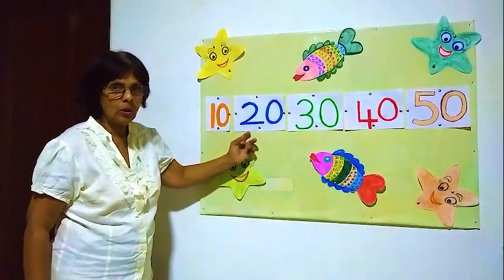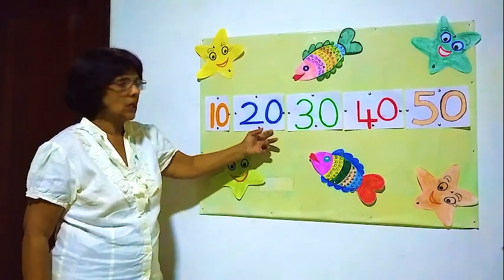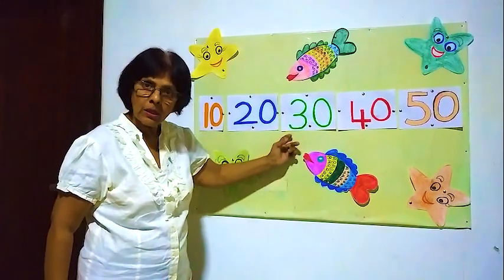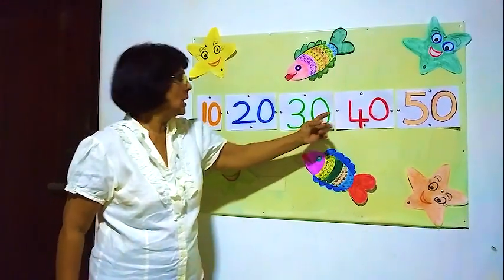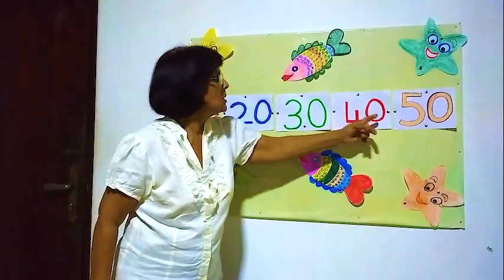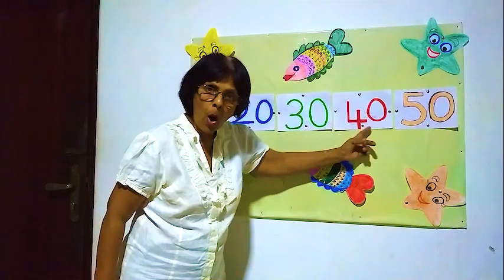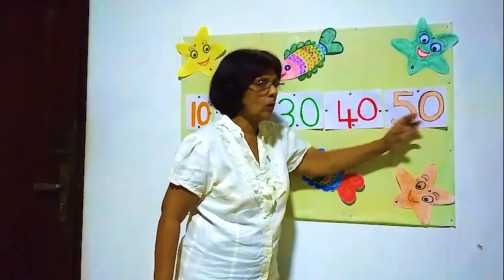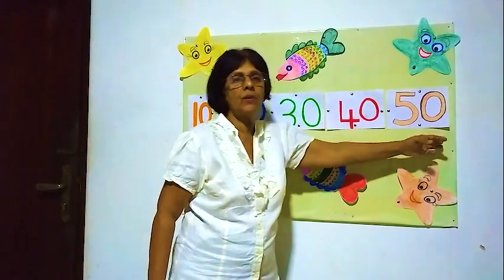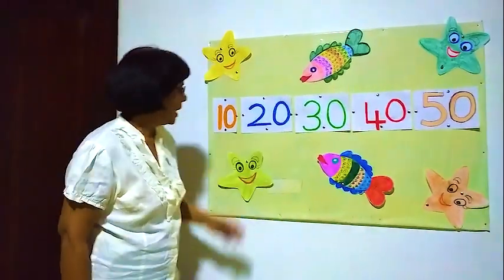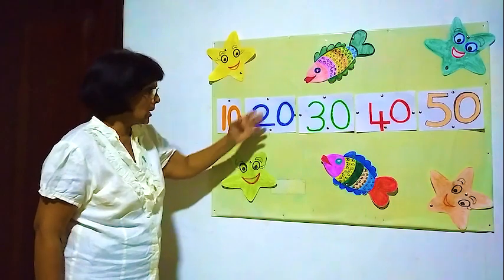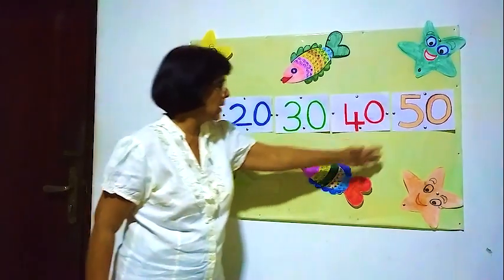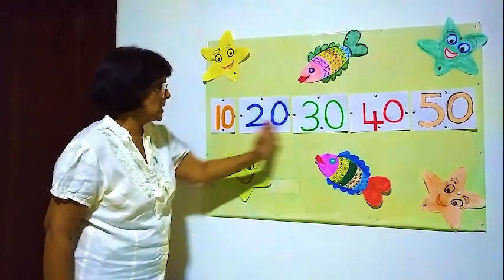2, 0 — 20. 3, 0 — 30. 4, 0 — 40. 5, 0 — 50. So: 10, 20, 30, 40, 50. Very easy.